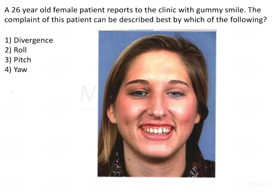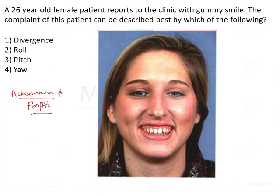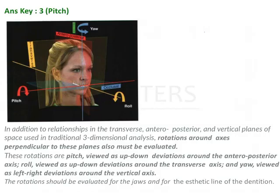In the 1960s, Ackerman and Prophet gave their diagrammatic representation of the classification based on five major factors. They also included the rotational tendencies of the jaw and dentition on the basis of three perpendicular planes — something known as pitch, roll, and yaw, which are rotational tendencies of the jaws along three perpendicular planes.